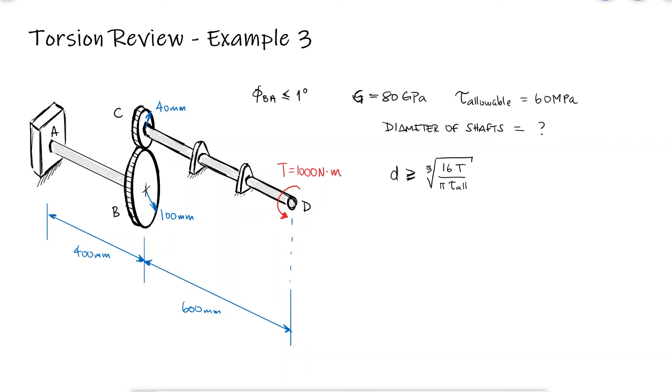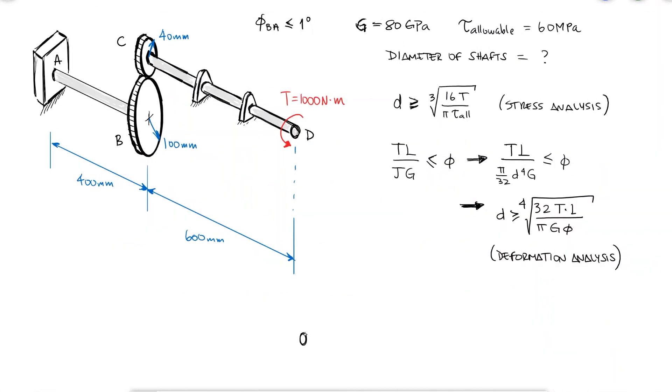Just like in the previous video, the diameter restrictions will be given by stress analysis and not exceeding the given angle of twist. Since the only thing I'm missing from these expressions is the internal torque of the shafts, the first thing we can do is find it by doing two free body diagrams.